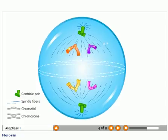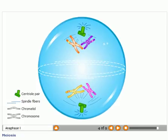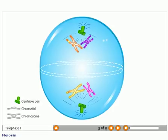The pairs pull apart and move along spindle fibers toward the two centrioles. The cell membrane pinches inward.